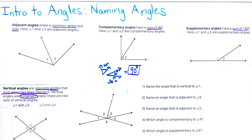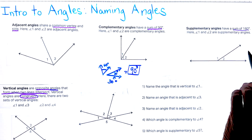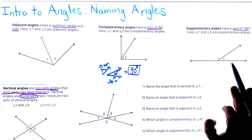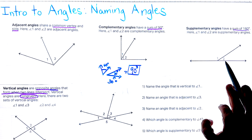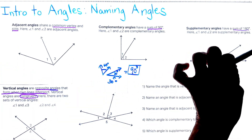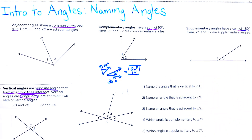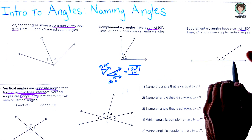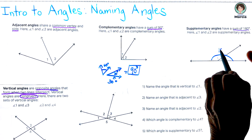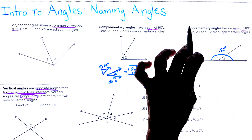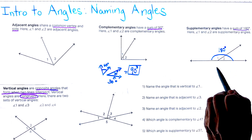For the next type, we have supplementary angles, and notice it says that it has a sum of 180 degrees. Angle one and angle two are also adjacent angles because they share a side and a vertex. Together these two angles form 180 degrees — they are supplementary.